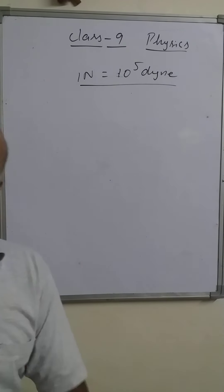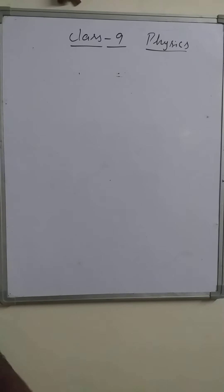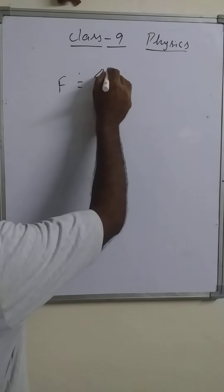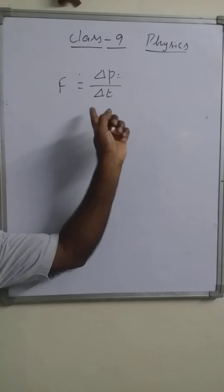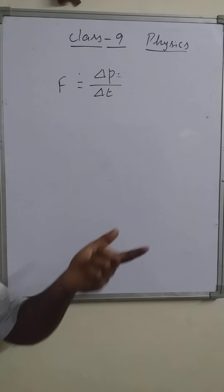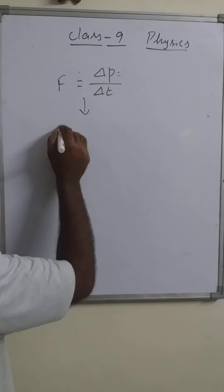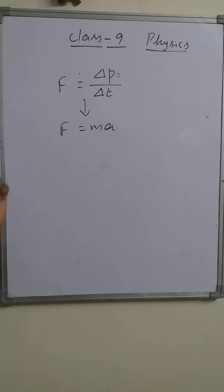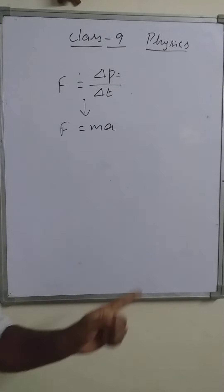Now we continue further related to Newton's second law of motion. The basic relation is F equals ΔP over Δt — the rate of change in momentum of a body is equal to the force applied in its direction. From this relation we obtained F equals m times a: the force applied on any object equals the product of mass and acceleration produced in it.